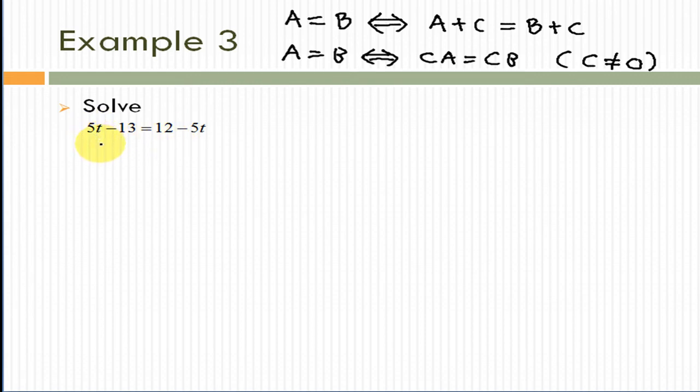To solve an equation means we want to find the value of t such that this statement becomes a true statement. Finding t is the same thing as we want to isolate t on one side of the equation. Because we want to isolate t in one side of the equation, in particular, we don't want to have this, for example, negative 13. How to get rid of this negative 13? We can use this property. We can add both sides by a certain number such that after we add with this number, we can eliminate negative 13. The obvious way is to add 13 to both sides.